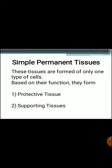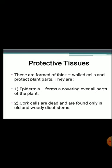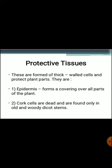Simple permanent tissue is formed of only one type of cell. Based on their function, they are divided into protective tissue and supporting tissue. Protective tissues are formed of thick-walled cells and protect plant parts. Epidermis forms a covering over all parts of the plant as a single layer of cells, protecting the underlying tissues. The epidermis of leaves secretes a waxy, waterproof layer called the cuticle. Cork cells are dead and are found only in old and woody dicot stems.